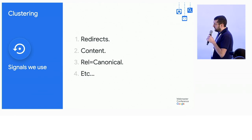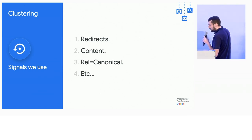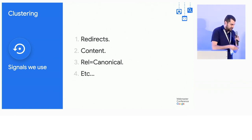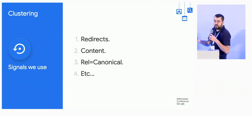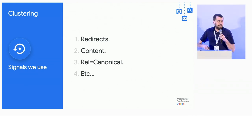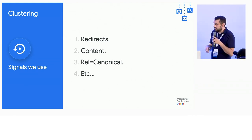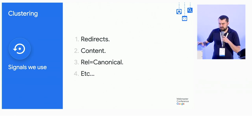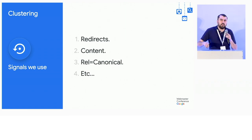The signals we use — there are a bunch of them. The three most prominent, and most at your disposal as well, are redirects, the actual content of the page, and rel canonical tags that you send to us. There are a few others we use, mostly variants on URL normalization, but those are a little different.